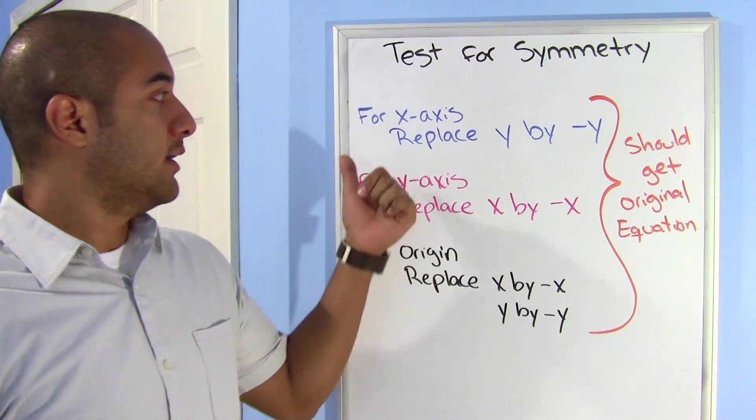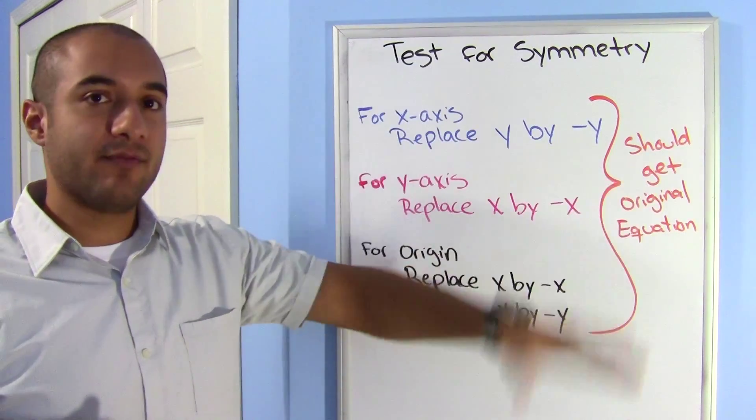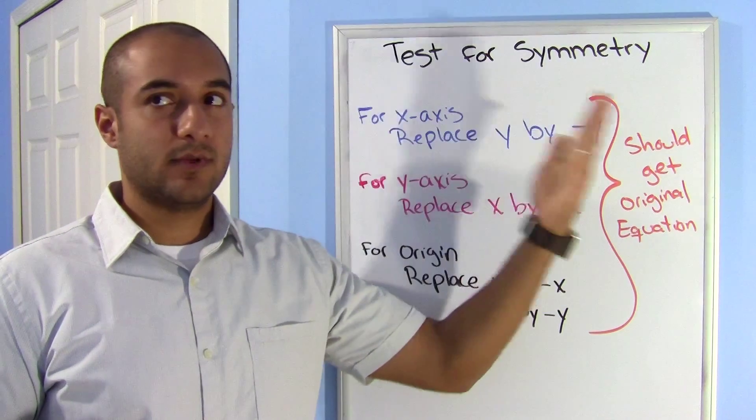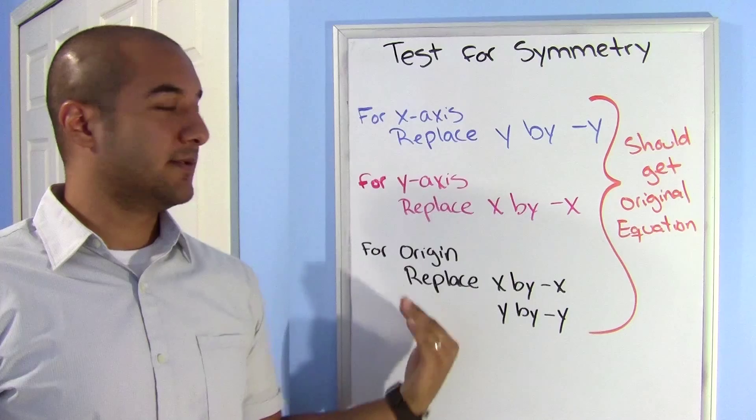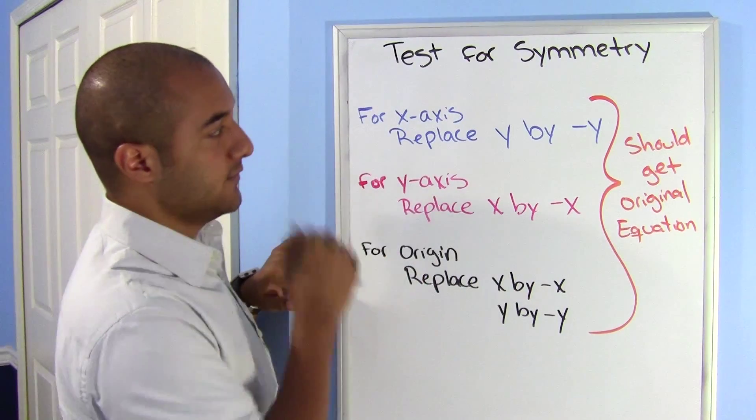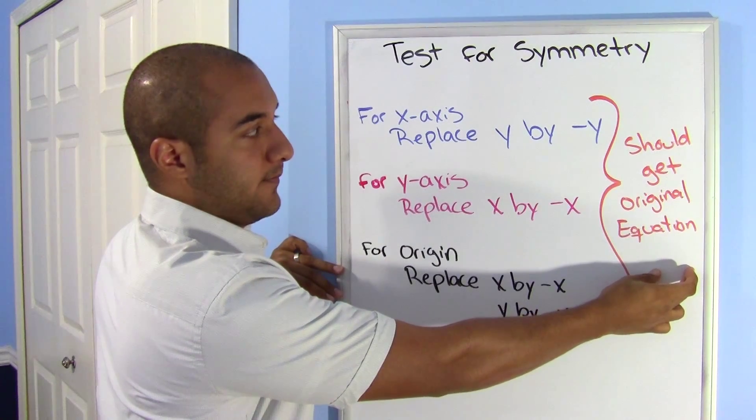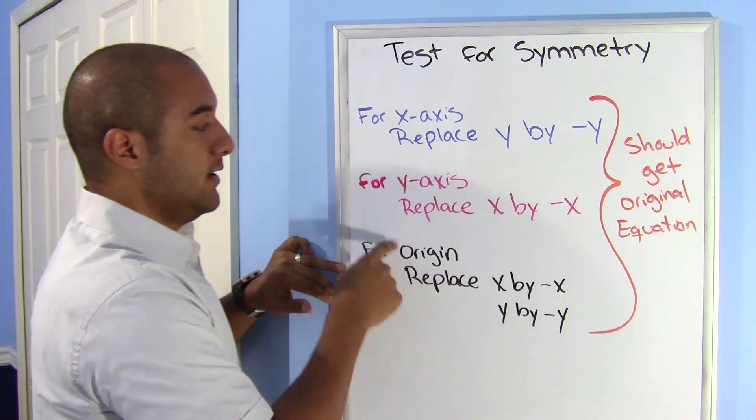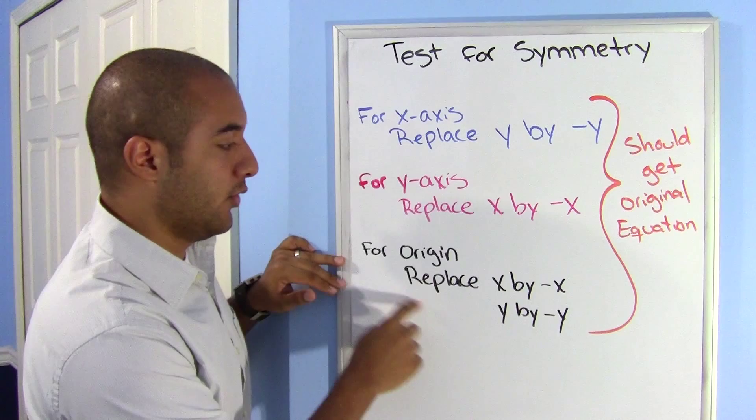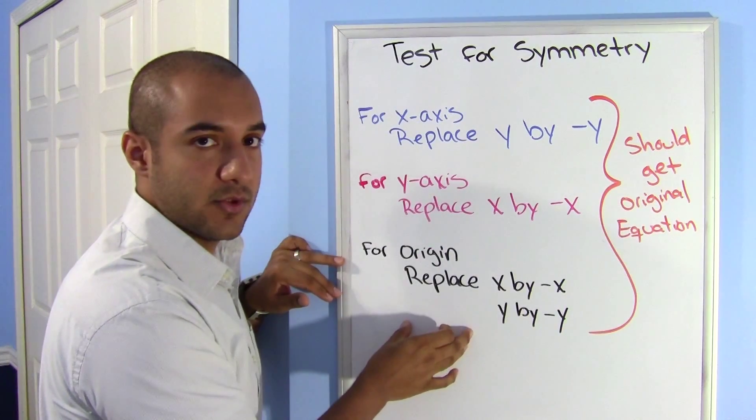Alright, you will be testing for symmetry for the x-axis, y-axis, and the origin. So that means that your graph would kind of have a mirror. If it's symmetrical about the x-axis, it does this. If it's symmetrical about the y-axis, it flips like this. And the origin kind of makes it do a diagonal, either this way or this way. Now what you need to do is, when you're testing for this, you replace: in the x-axis, you replace the y by negative y, and you should get the original equation back. If you do, then yes, it's symmetrical about the x-axis. For the y-axis, you replace the x with the negative x, and if you get the original equation, it's symmetrical about the y-axis. For the origin, you replace them both, x to the negative x and y by negative y. If you get back the original, this is symmetrical about the origin. Alright, let's go ahead and give it a try.